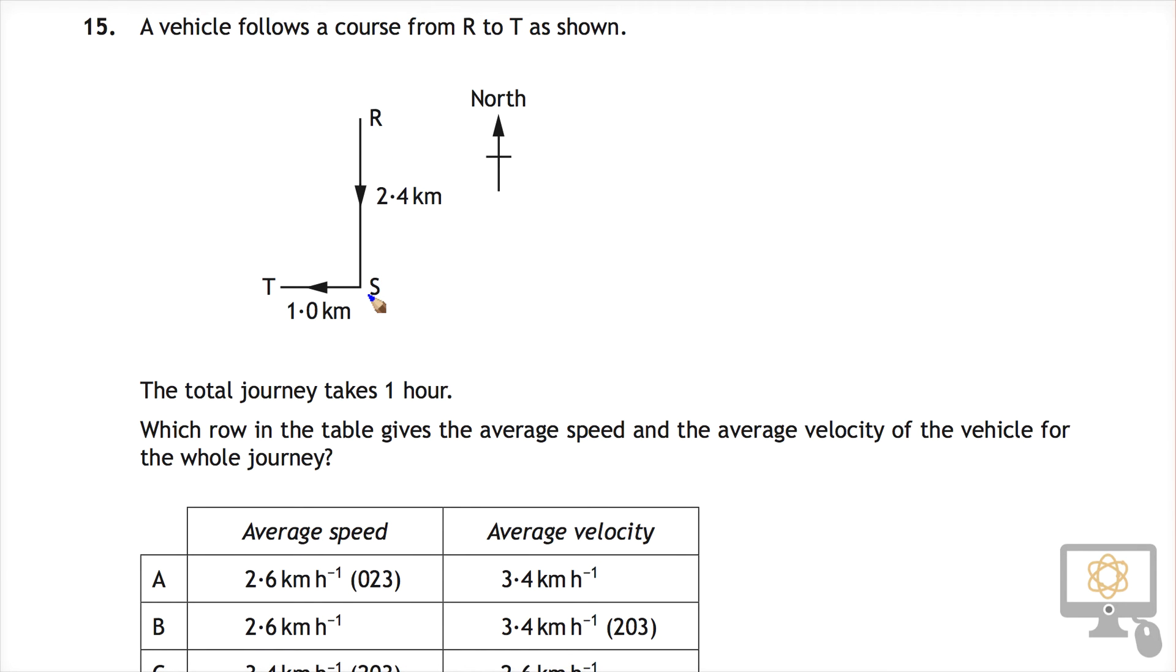It travels southward 2.4 kilometres and then west 1 kilometre. The journey takes one hour. Which row on the table gives the average speed and the average velocity?